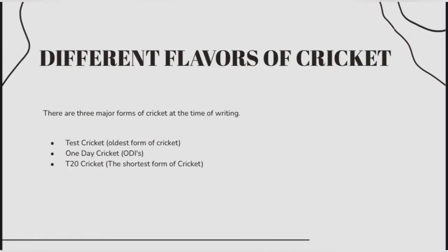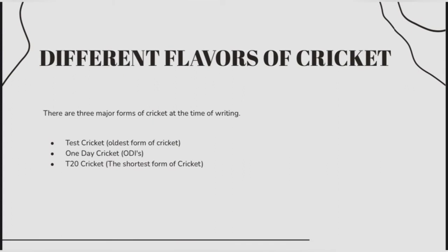There are different forms of cricket — mainly three forms. The very first one is Test cricket, which is the oldest form of cricket. Then comes One Day Cricket, that is One Day International, ODI. And then comes T20, that is 20-20 cricket, which is the shortest form of cricket.